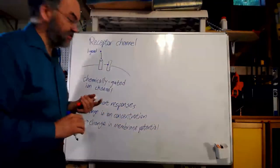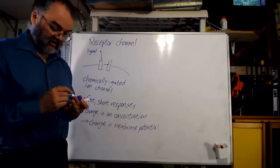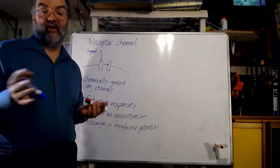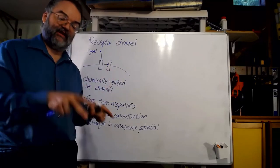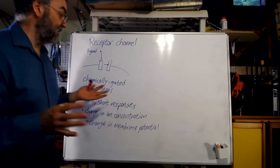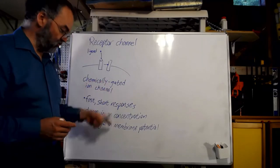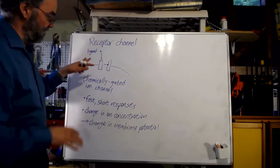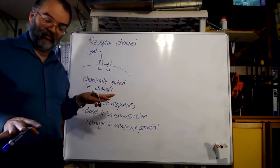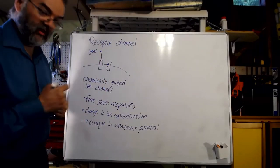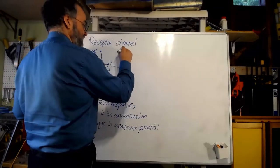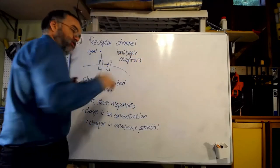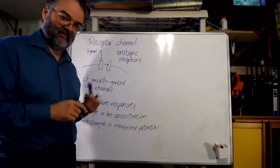What that does depends on context. In cardiac muscle, calcium channels respond to the binding of certain hormones, and when calcium comes in it affects the functioning of the heart muscle machinery. In nerve cells, usually what matters is a change in membrane potential. In the nervous system, receptor channels are also sometimes called ionotropic receptors.